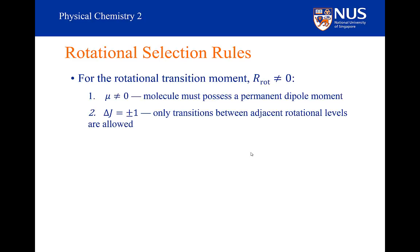The second selection rule is that when you see a transition, there is a change in the rotational quantum number delta J. That change can only be plus or minus 1. It can't be zero, of course, because if delta J equals zero, the rotational state has not changed. But why is it plus or minus 1?